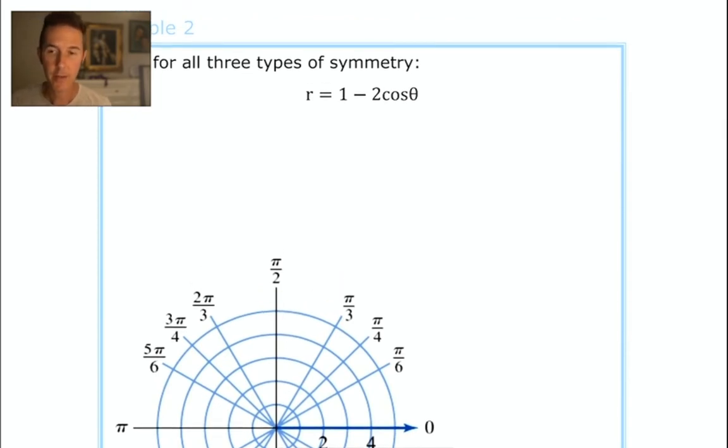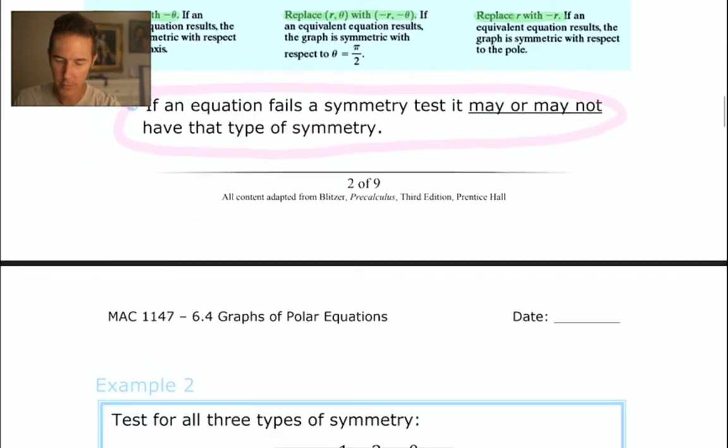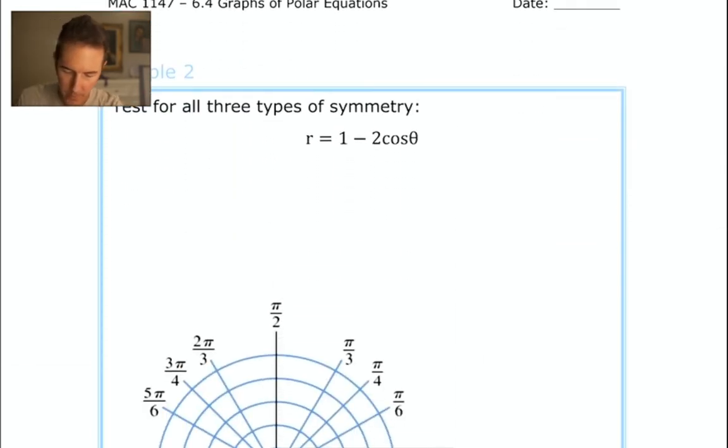You could fast forward in the video to see how much I write and decide if you can make it fit. Let's do them in order - we're going to test for polar axis symmetry first, replacing θ with -θ.